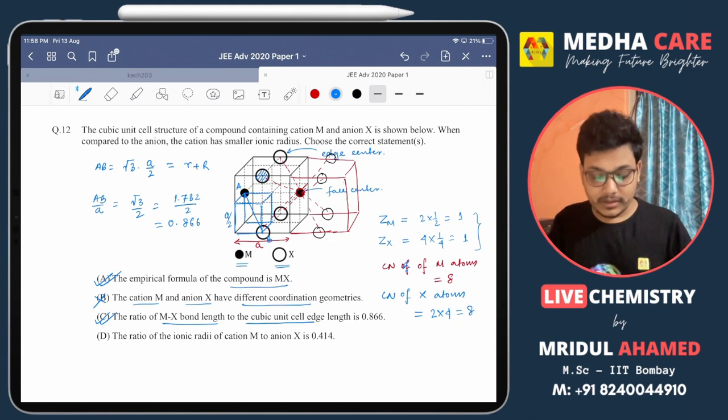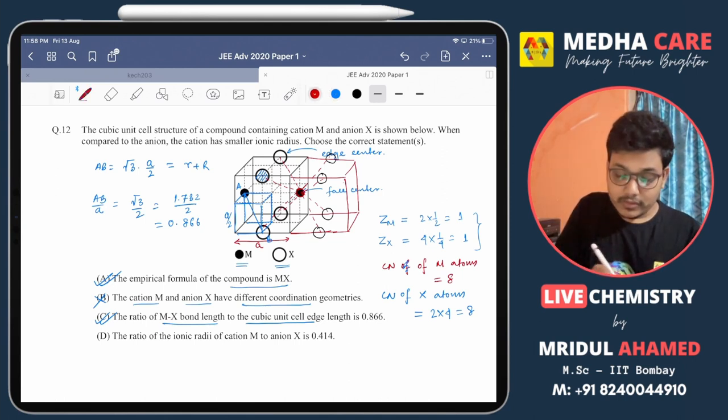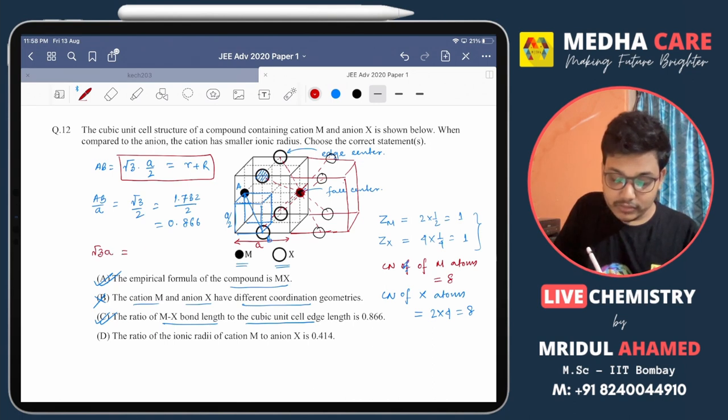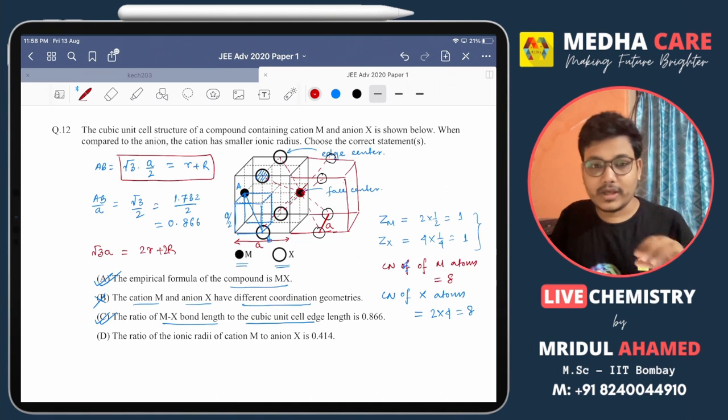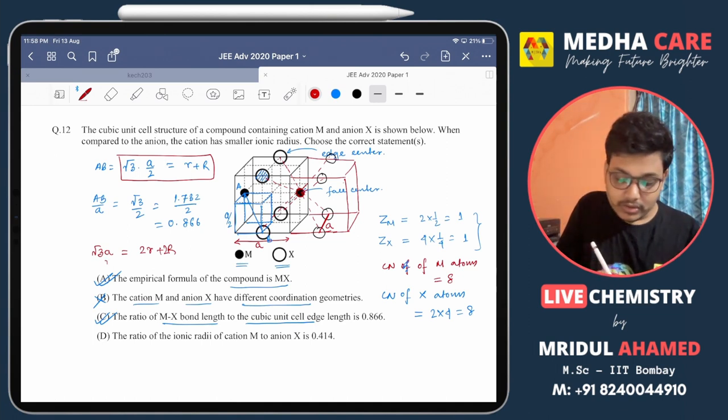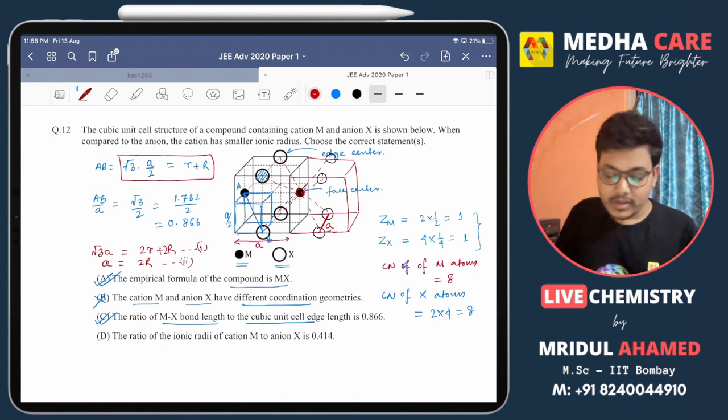Now going for option number D: the ratio of the ionic radii of cation M and anion X is 0.414. That is very important. Just rewrite this equation: root 3 a by 2 equals 2r plus 2R. And the length of these 2 atoms is a, so a equals 2R. This is equation 1 and this is equation 2. If we divide equation 1 by equation 2, we will get